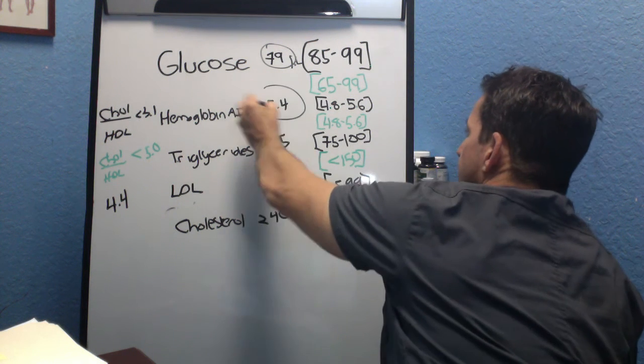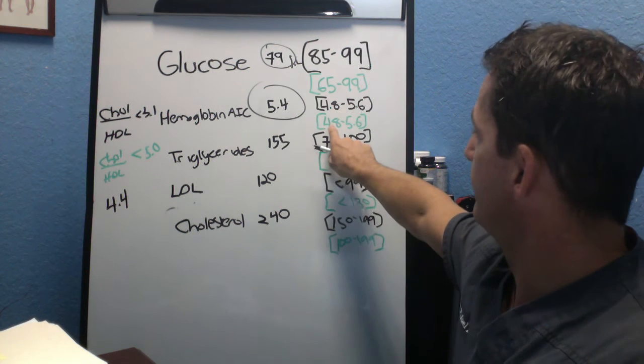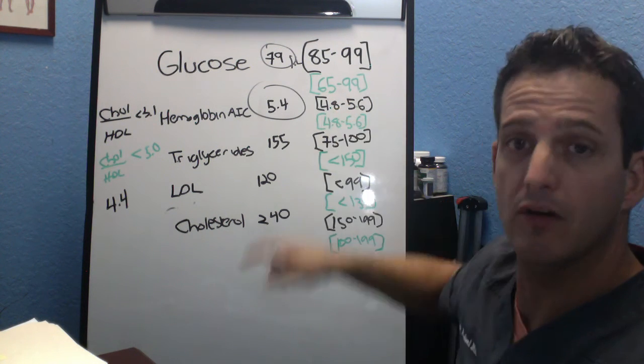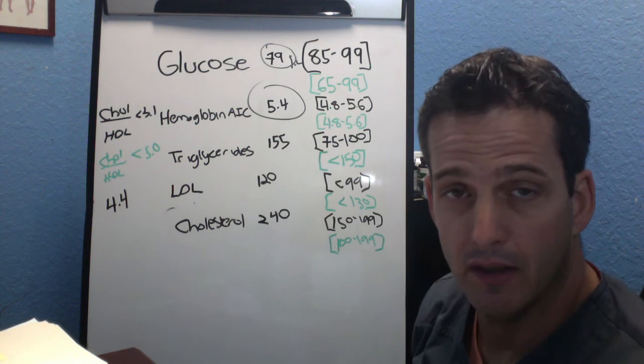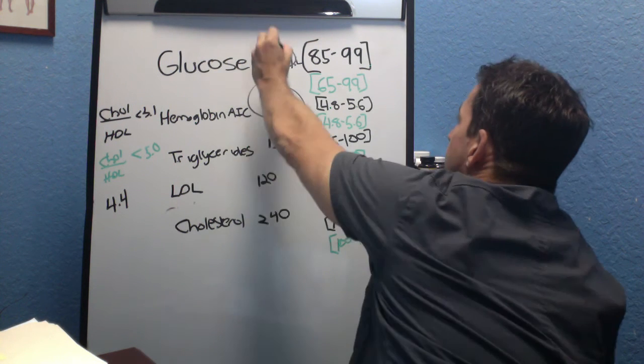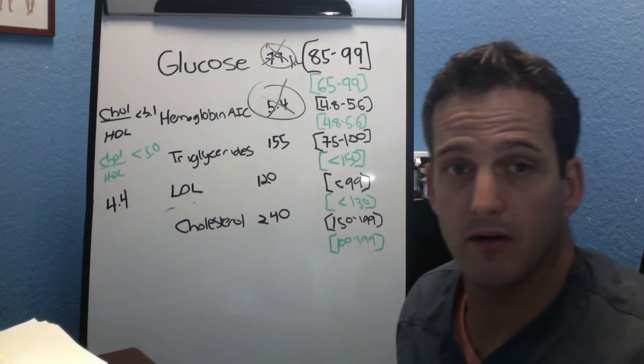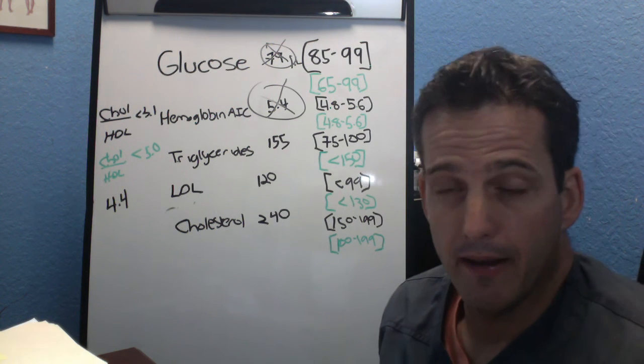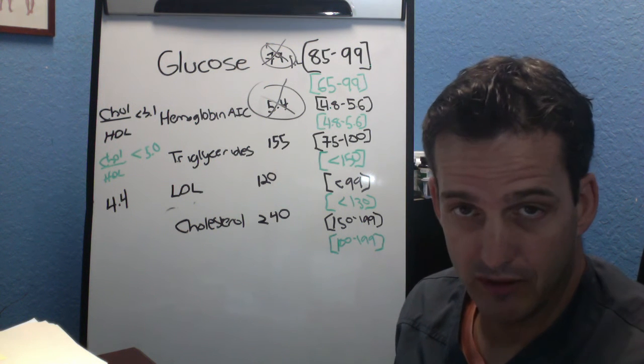The other thing is A1C. So you can see that A1C from a lab range is 4.8 to 5.6 and 4.8 to 5. So those ones are actually the same. And in this case the person was in range. So typically when they go see their doctor they'll say you know what, you are not insulin resistant because your glucose is normal and your hemoglobin is normal.